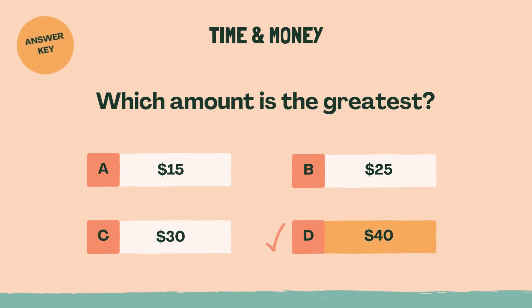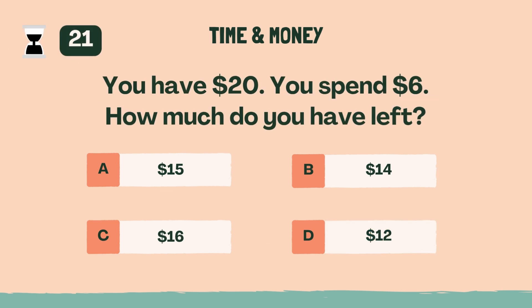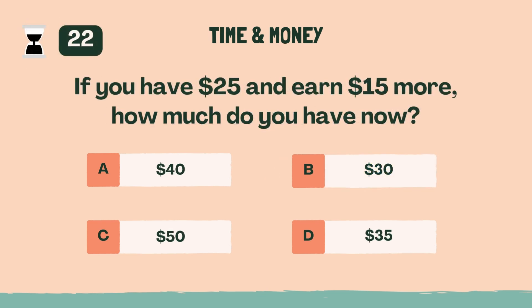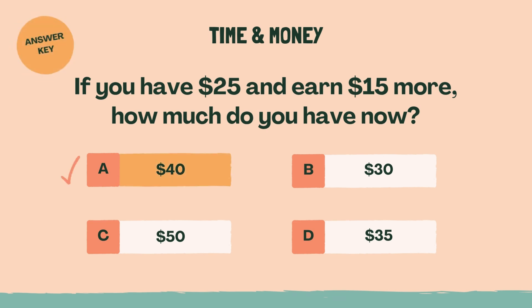Which amount is the greatest? D, $40. You have $20, you spend $6, how much do you have left? B, $14. If you have $25 and earn $15 more, how much do you have now? A, $40.